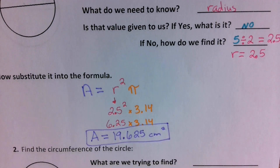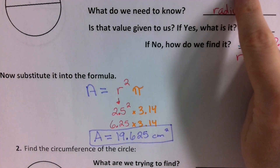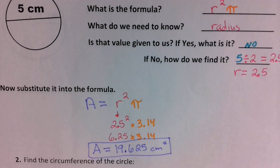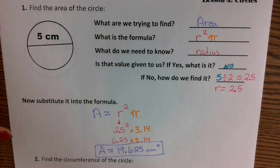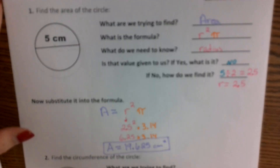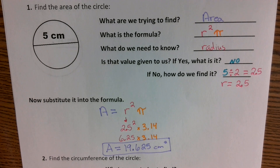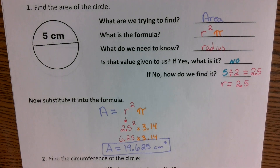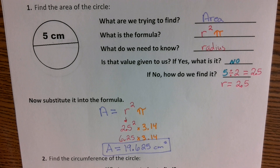You're going to do this whole thing — answer each of the questions. Tell me whether we're finding area or circumference. What is the formula? What piece of information do you need — radius or diameter? Does the diagram give us what we need? If it does, tell us what it is. If it does not, tell us how to find it and what it equals. Then substitute it back into the problem to solve. Do that for problems 2, 3, and 4.